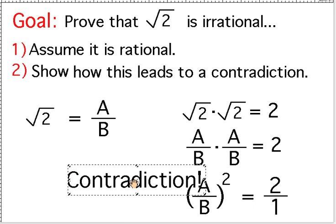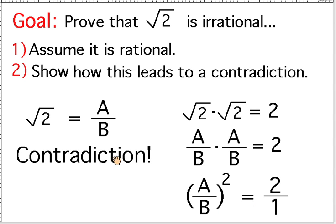And that is the essence of the proof. We assumed that radical 2 could be written as a fraction in simplest terms. But we showed that that led to a contradiction. And therefore it can't be a fraction. It can't be rational. And that is the proof.